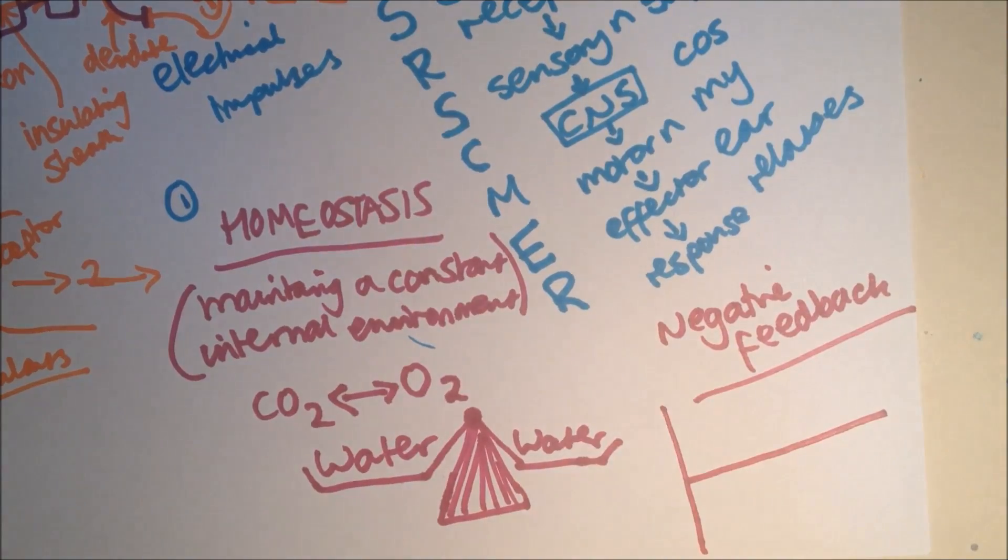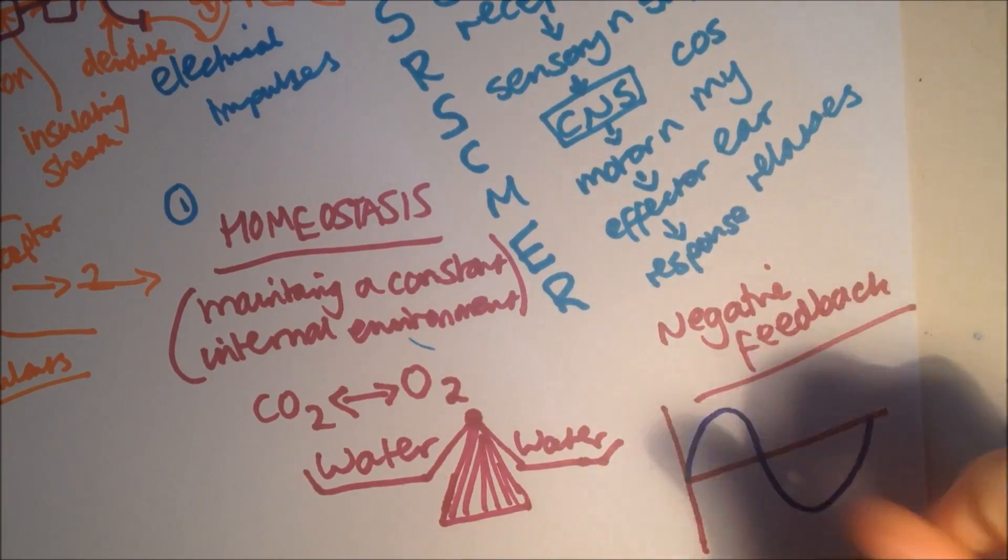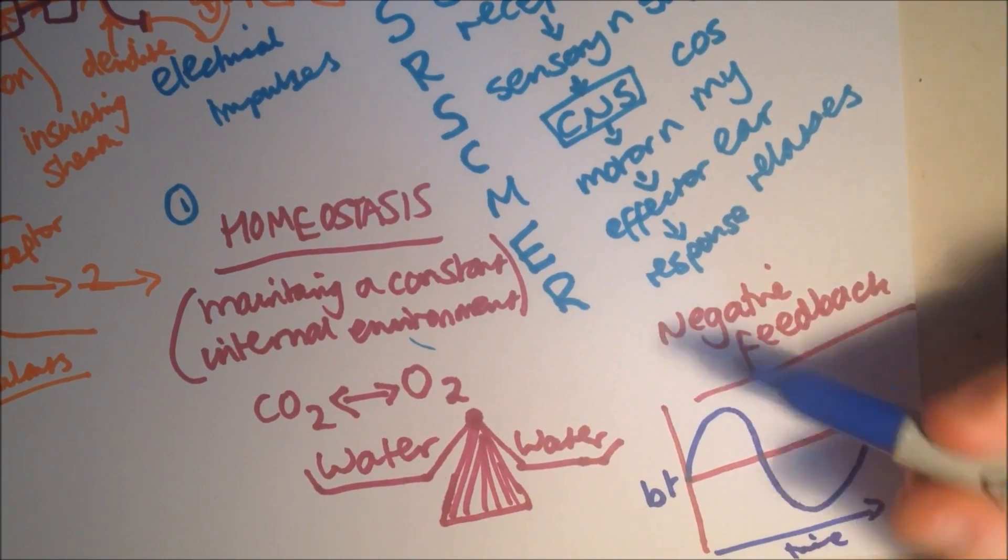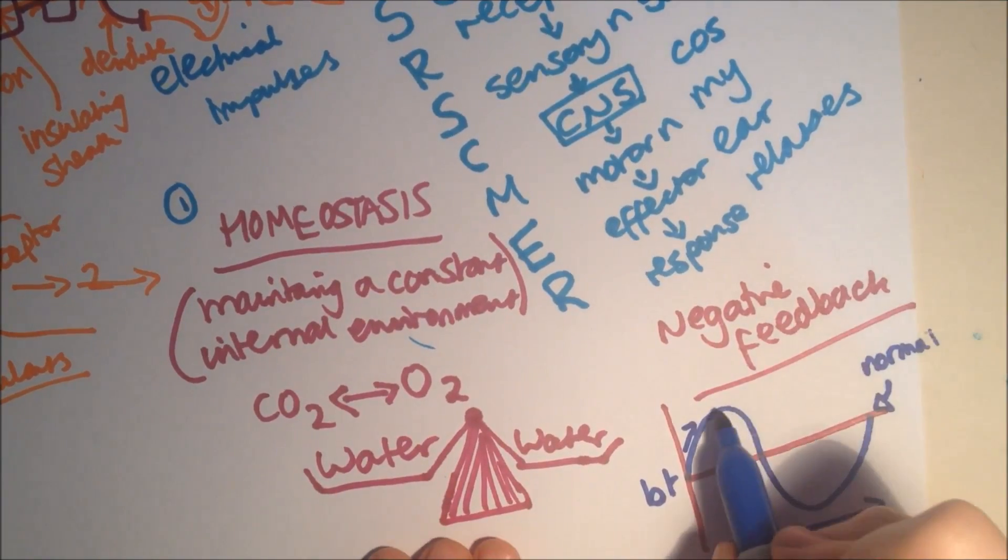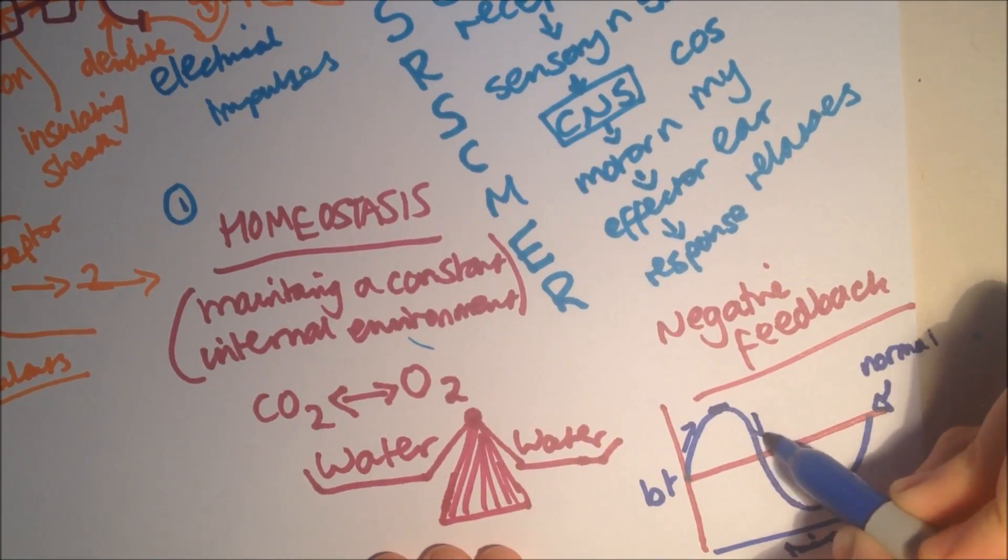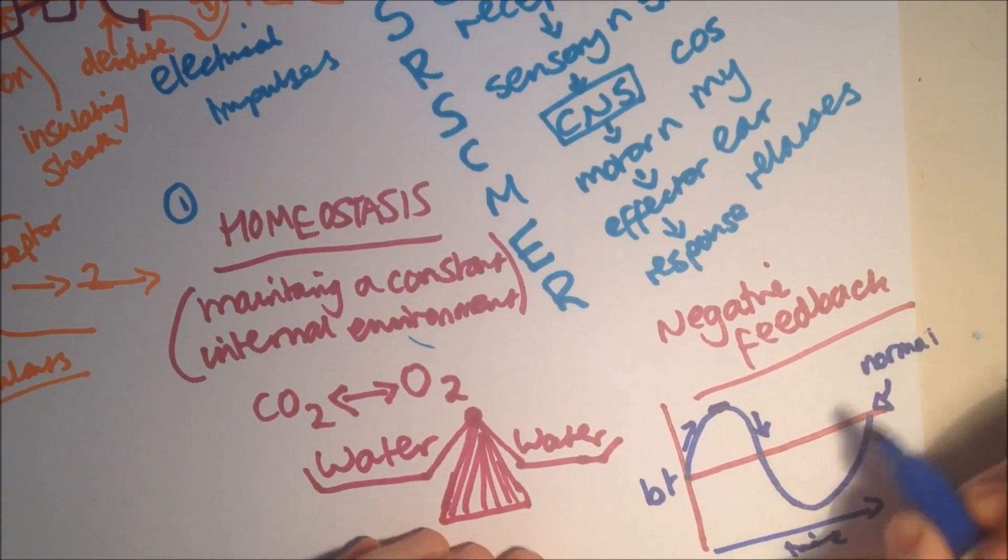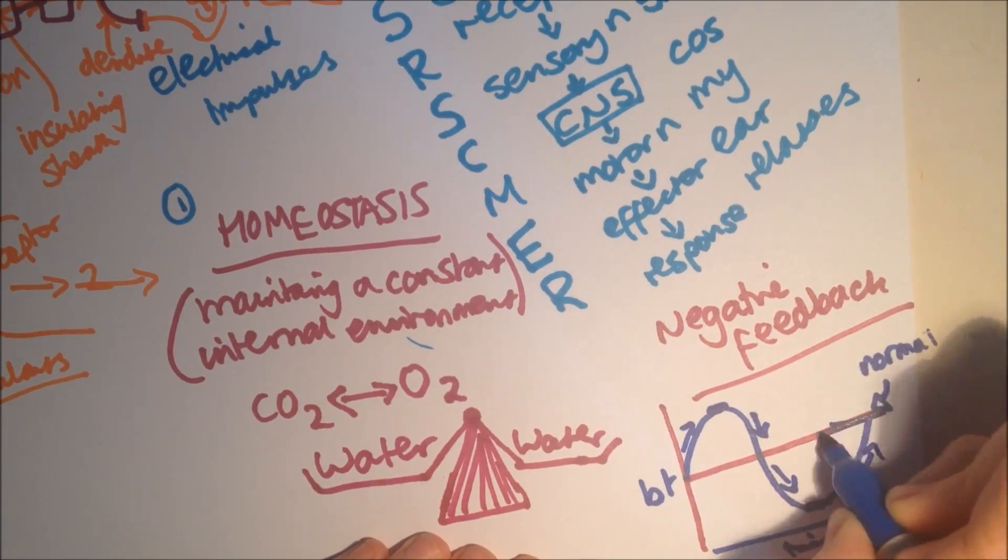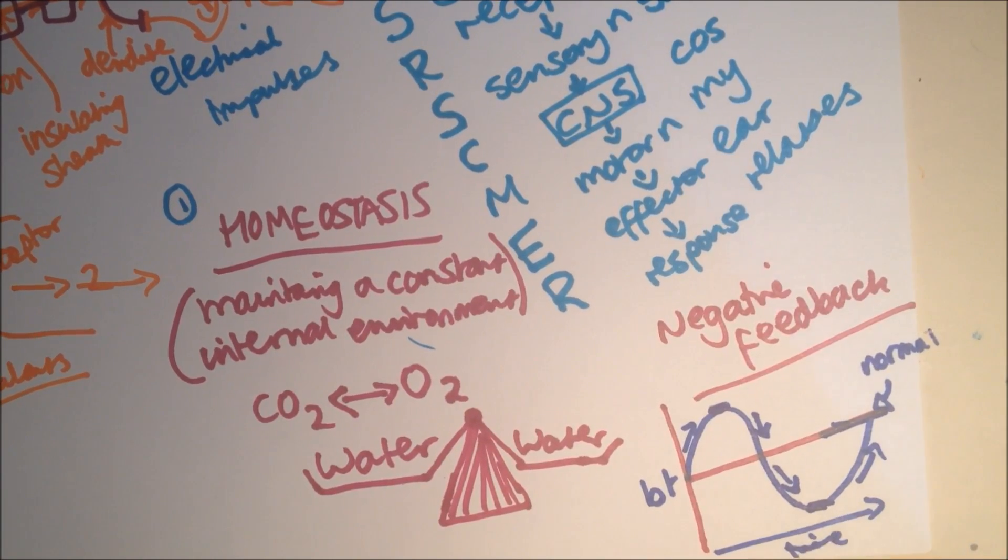So, this is a graph. Great graph. If this is body temperature, here's time. So, this is increasing the normal. So, we have a response here, so it decreases whatever factor needs to decrease. And then, if it gets too low, then it recognises it here, and increases it, so it makes it normal. So the internal environment tends to stay around the norm.